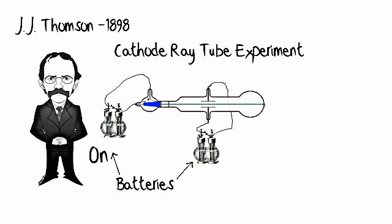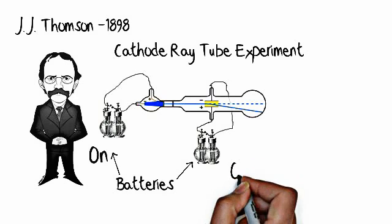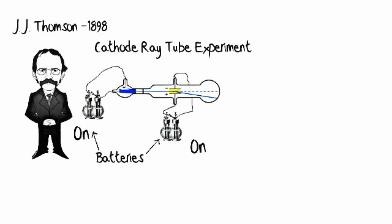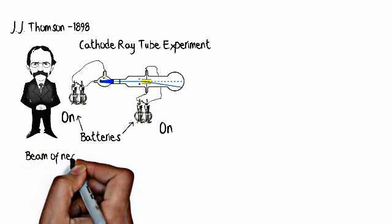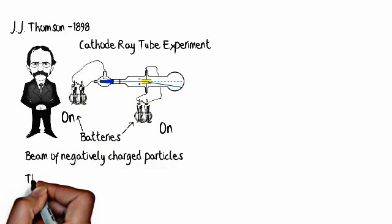Now when you set a second set of batteries to the middle of the cathode ray tube and apply a charge where you can see there's a positive negative, the beam bends. And this is vitally important because it bends towards the positive away from the negative. What JJ Thompson realized is that the beam has to be negatively charged. So you have a beam of negatively charged particles.